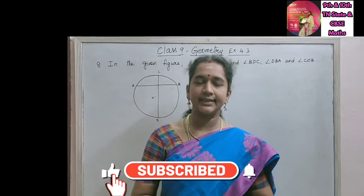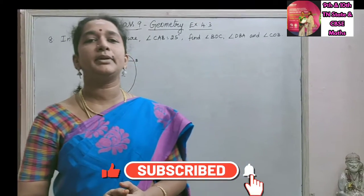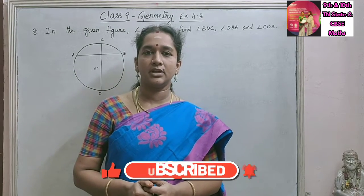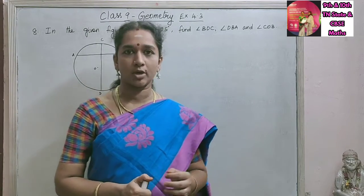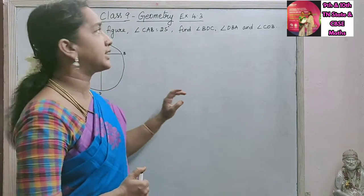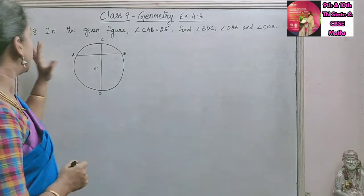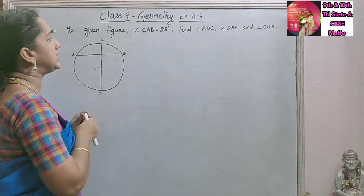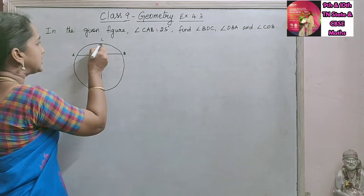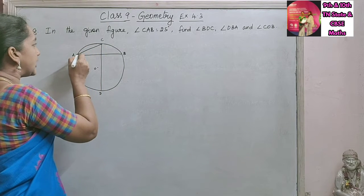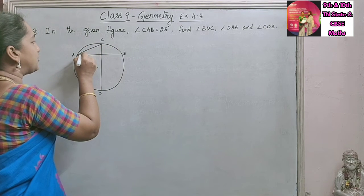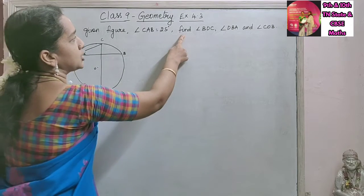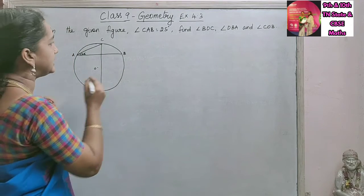Good morning students. In this class I will be doing class 9 Samacheer Kalvi syllabus or matriculation syllabus, 4th chapter geometry, Exercise 4.3, 8th sum. In the given figure, angle CAB is given as 25 degrees and we are asked to find angle BDC.